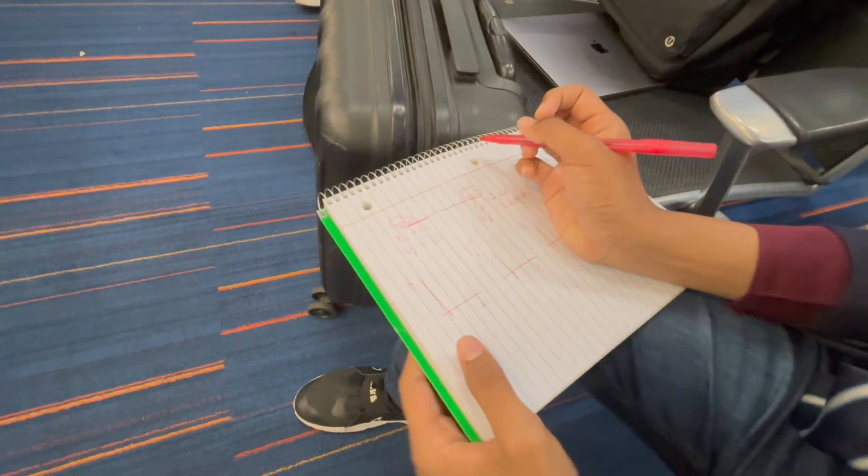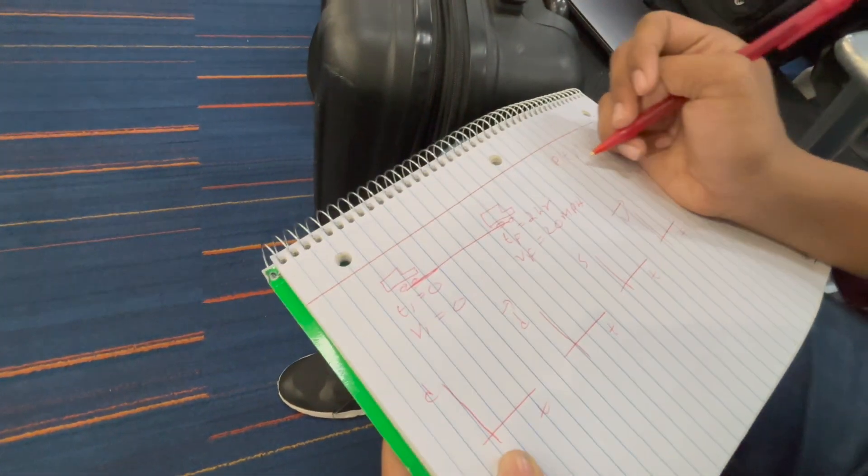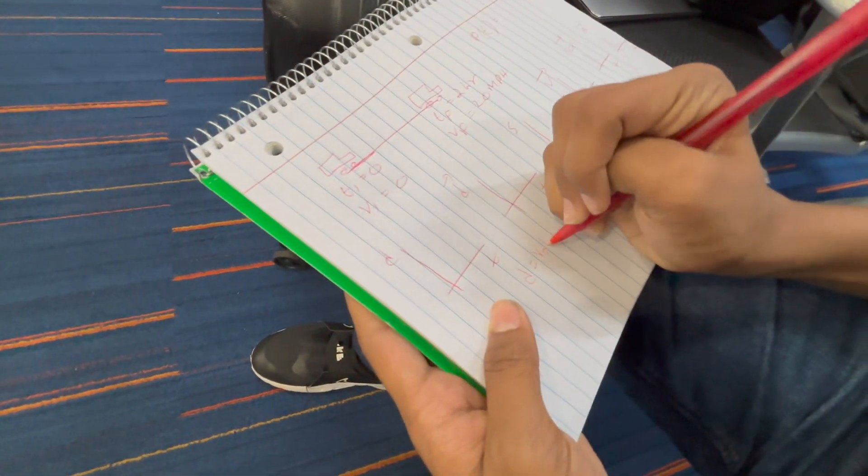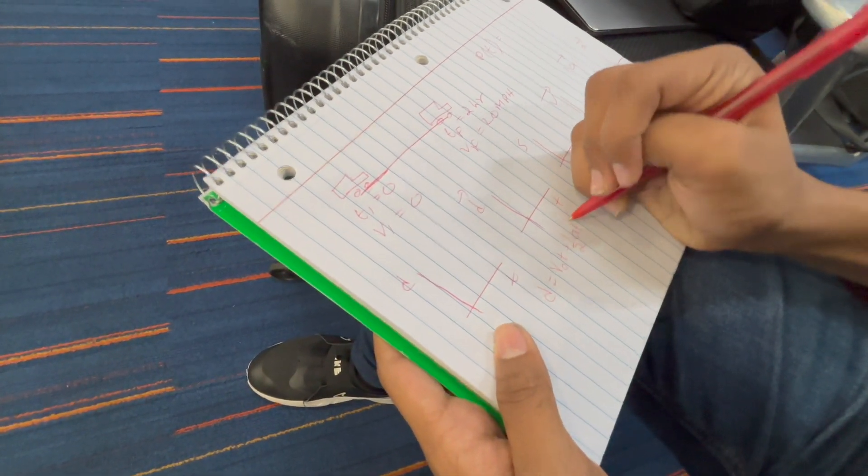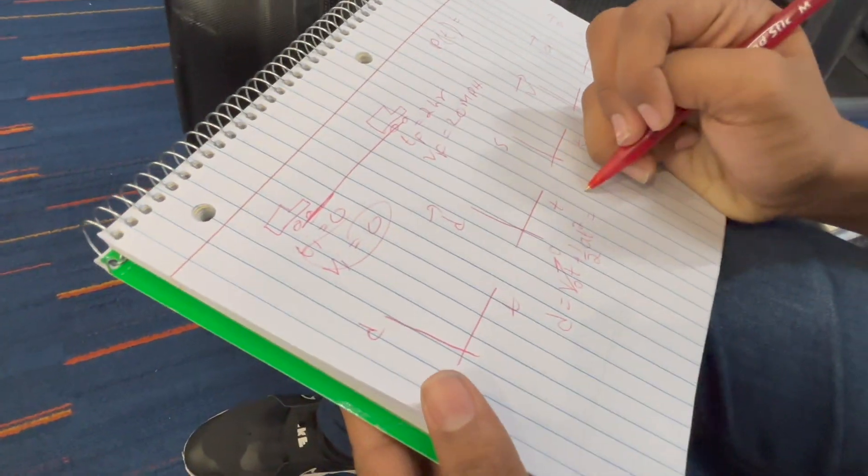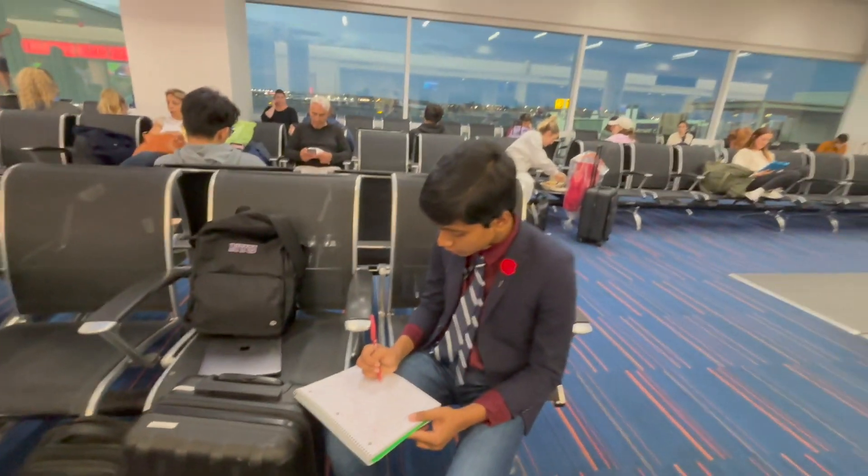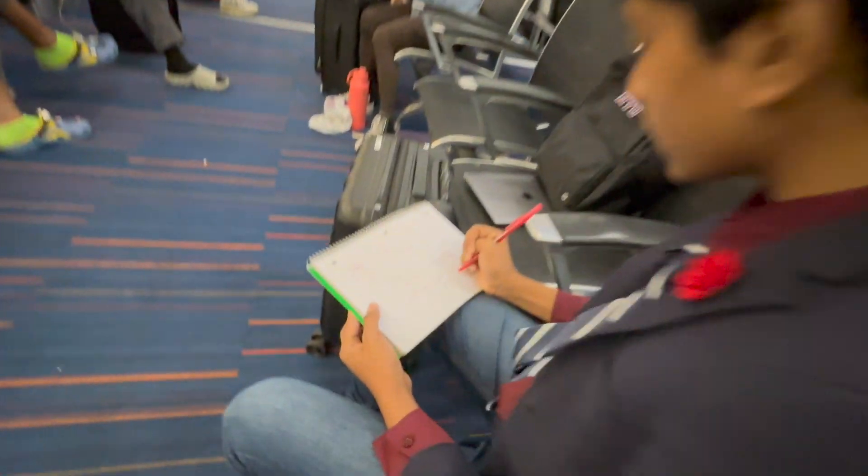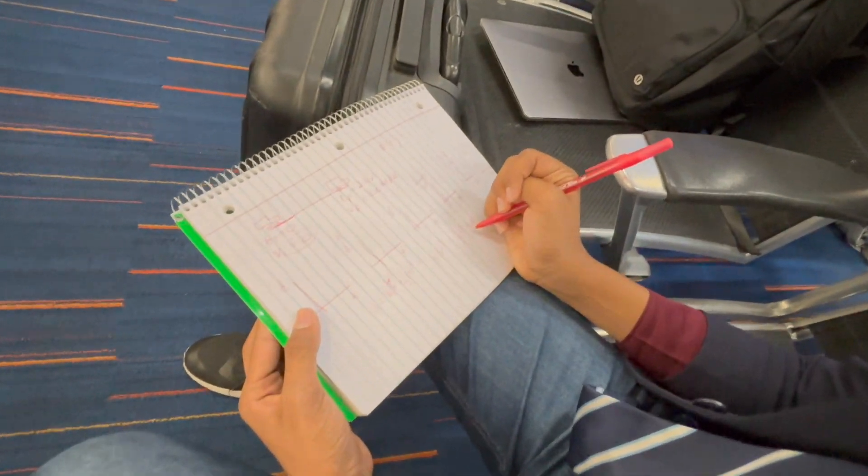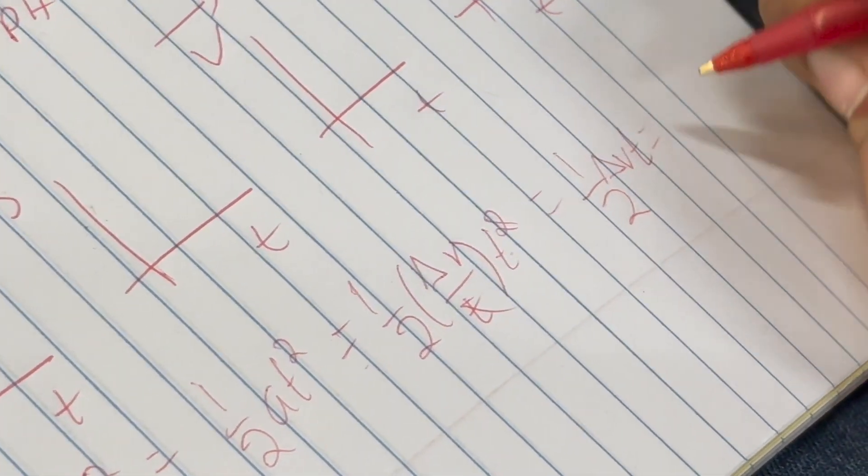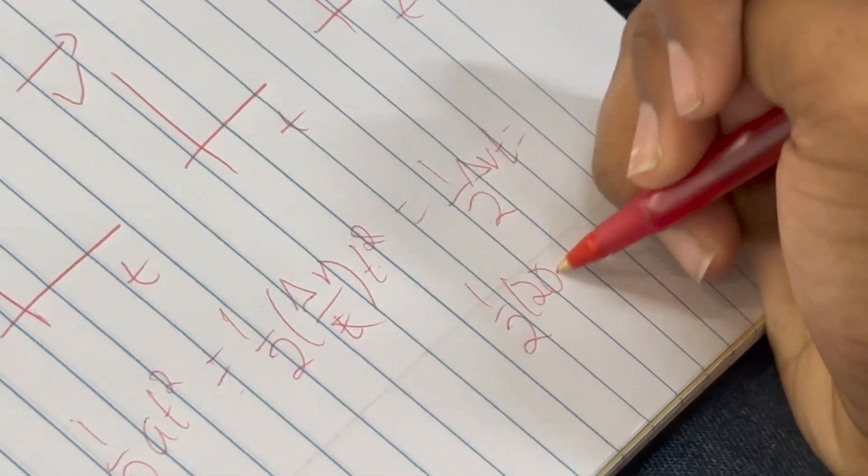How are we going to do that? Well, we have to find the distance first. The total distance traveled is going to be vit plus half a t squared. So what's v naught t? Well, v naught is of course zero as provided in the problem, so we just get half a t squared. And of course a is just a change in velocity divided by time.